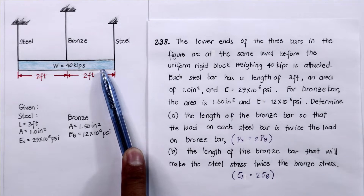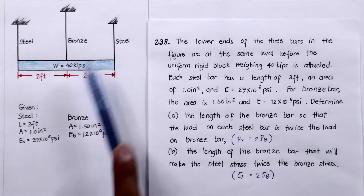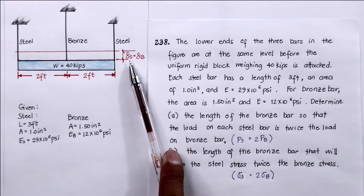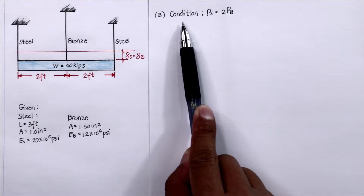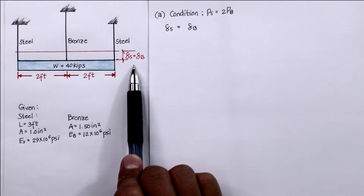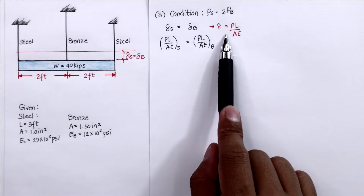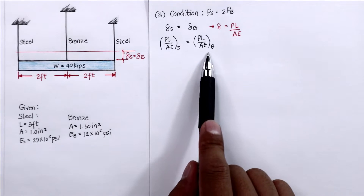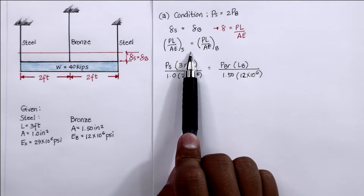Before the 40-kip rigid block is attached, the bronze and steel bars are at the same level. This is the original position of bronze and steel before the weight is applied. After loading, the deformation of steel equals the deformation of bronze — this is the compatibility condition. For question A, the force of steel is twice the force of bronze. Using this condition where deformation of steel equals deformation of bronze, we substitute the deformation formula PL/AE.